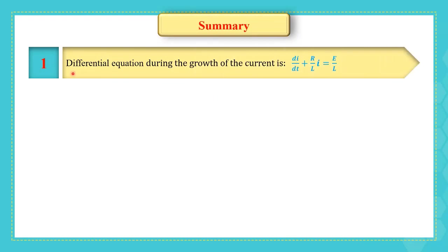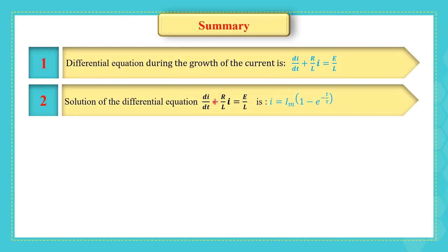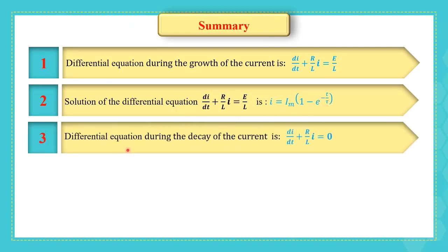From the previous video, the differential equation during the growth of the current is di/dt + (R/L)i = E/L. The solution is i = i_max × (1 − e^(−t/τ)).